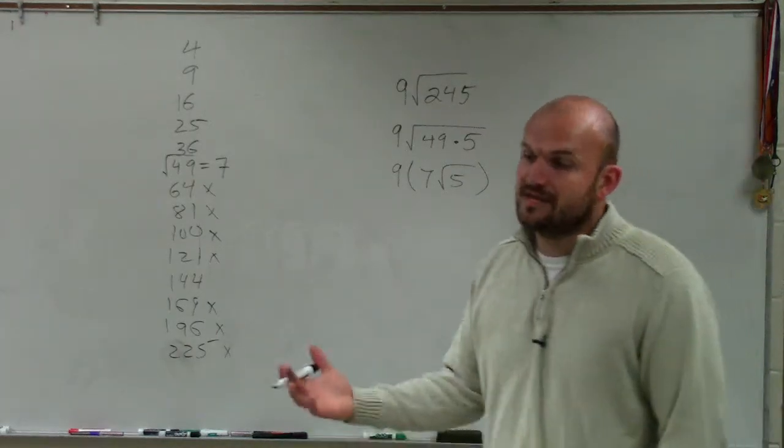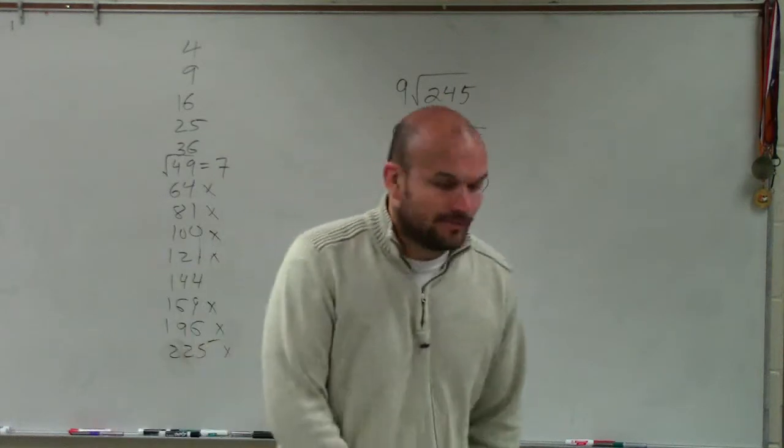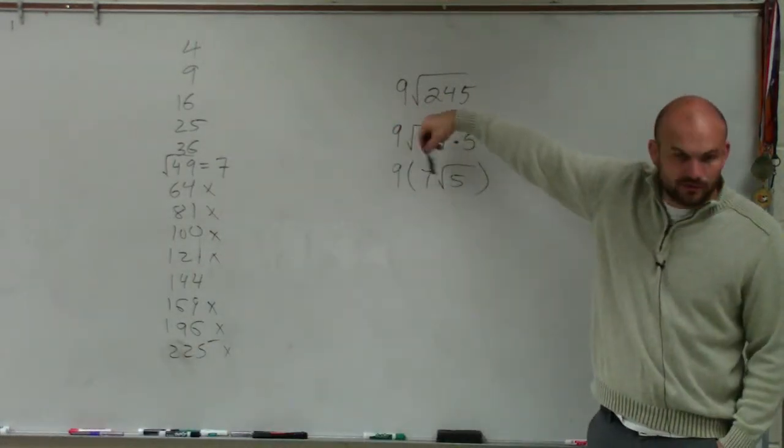And there's a number outside the radical, or the radicand, or the radical. So now, what you can do is, when you have numbers outside of a radical, you can multiply them.